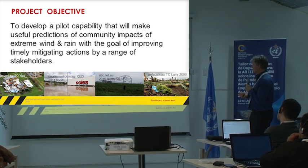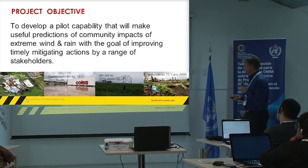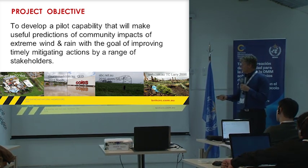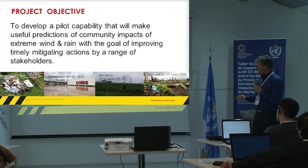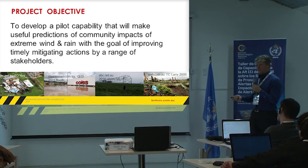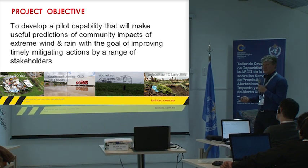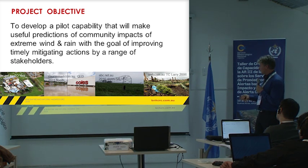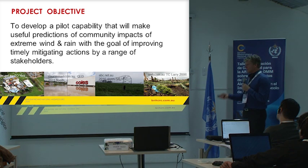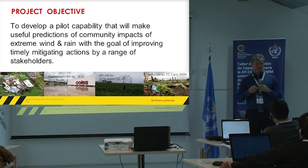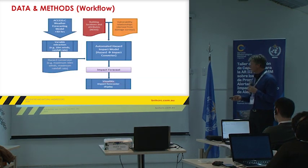The objective is to develop a pilot capability that will make useful predictions of community impacts of extreme wind and rain, with the goal of improving timely mitigating actions by a range of stakeholders. Examples include TC Yarsi, a Category 5 that hit a high population-dense area; 2011 La Niña floods; and TC Larry — these are the sorts of events where we'd like to use impact modelling to produce better information.